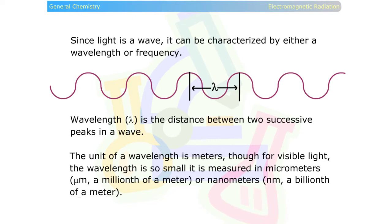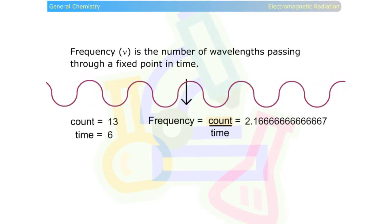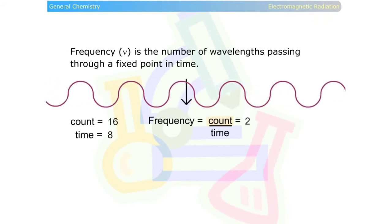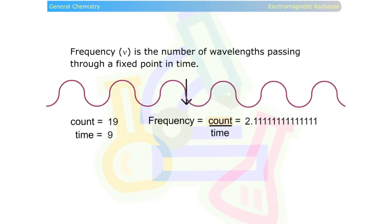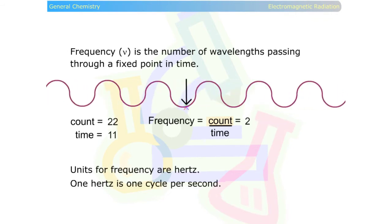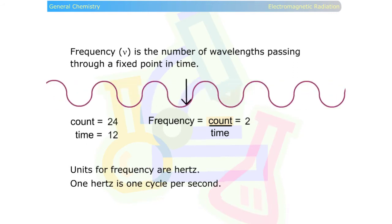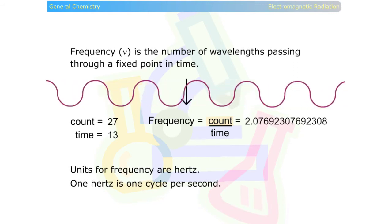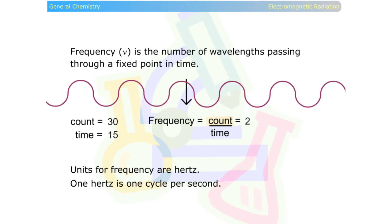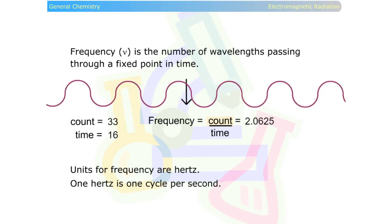The unit of a wavelength is meters, though for visible light the wavelength is so small it is measured in micrometers or nanometers. Frequency is the number of wavelengths passing through a fixed point in time. Units for frequency are Hertz. One Hertz is one cycle per second.